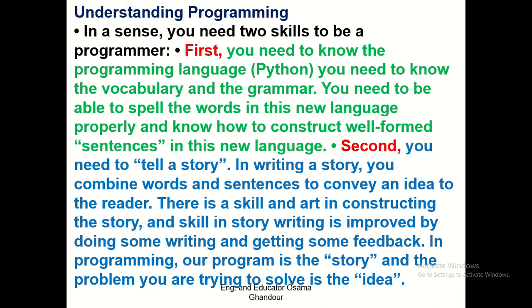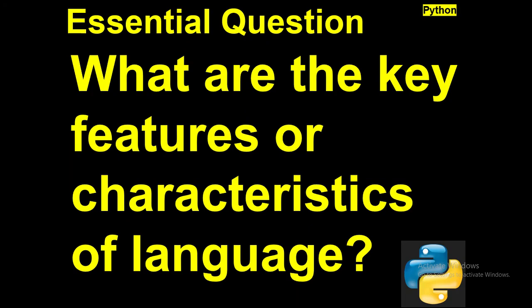The second thing you need to do is tell a story. You need to communicate an idea to the reader. There is a skill and art in constructing the story, and that skill improves by doing some writing and getting feedback. In programming, our program is the story and the problem you are trying to solve is the idea.